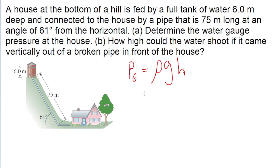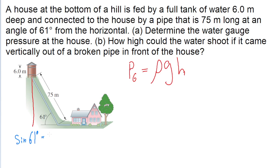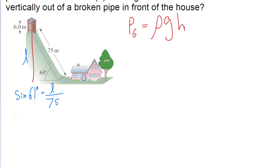The trickiest part of this problem is working out what this h value is, because the hill is at an angle, so we're going to need to do a little bit of trigonometry to figure out what that vertical depth actually is. We can see that there is a vertical depth of 6 meters coming from the tank itself, so that h depth is going to be 6 meters plus whatever the vertical height of the hill is. Doing some basic trigonometry, the sine of the hill's angle equals the opposite over the hypotenuse — the opposite length we're trying to discover, divided by the hypotenuse of 75 meters. So the total height from the top of the tank to the bottom of the hill where the house is, is 6 meters plus 75 times the sine of 61 degrees.